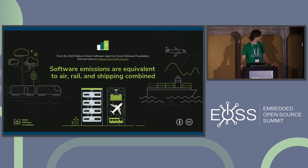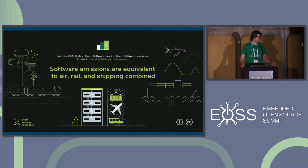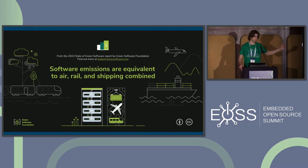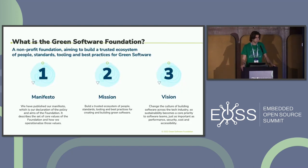A quick stat because people love stats: software-related CO2 emissions account for roughly four percent of current world emissions — more than the air, rail, and shipping industries combined. It doesn't sound like a lot but it's bigger than those sectors, so we do make an impact and there's a lot of work for us to be done in that area.